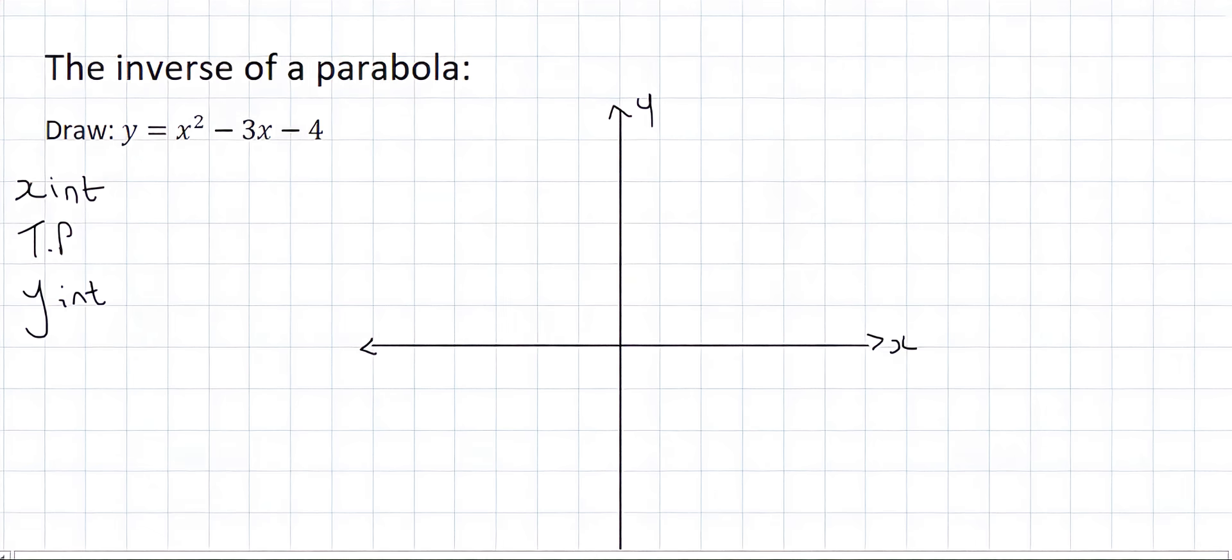And then it also cuts the y-axis so we'll find the y-intercept. And so to find x-intercepts you always make y equal to 0. So it'll be 0 equals to x squared minus 3x minus 4. You can then factorize that fairly easily or you could use the quadratic formula if you wish. I usually use the quadratic formula but when it's one that I know is going to factorize easy then I just do that of course.